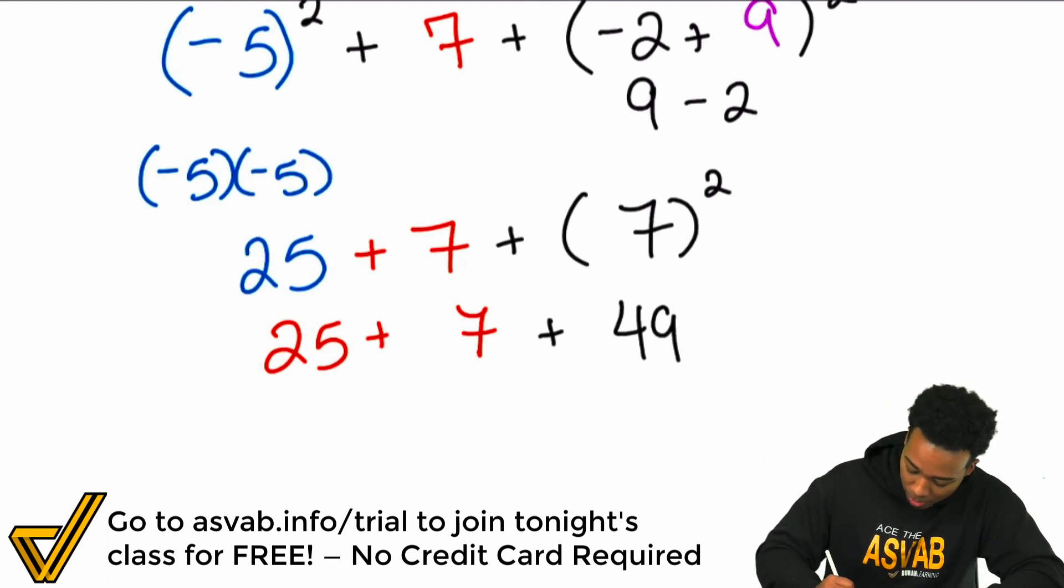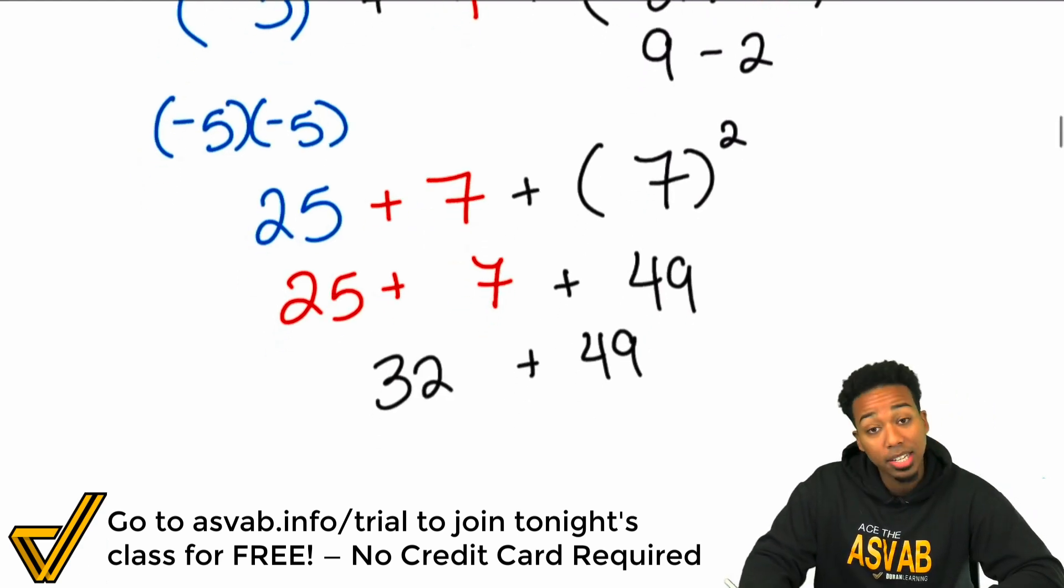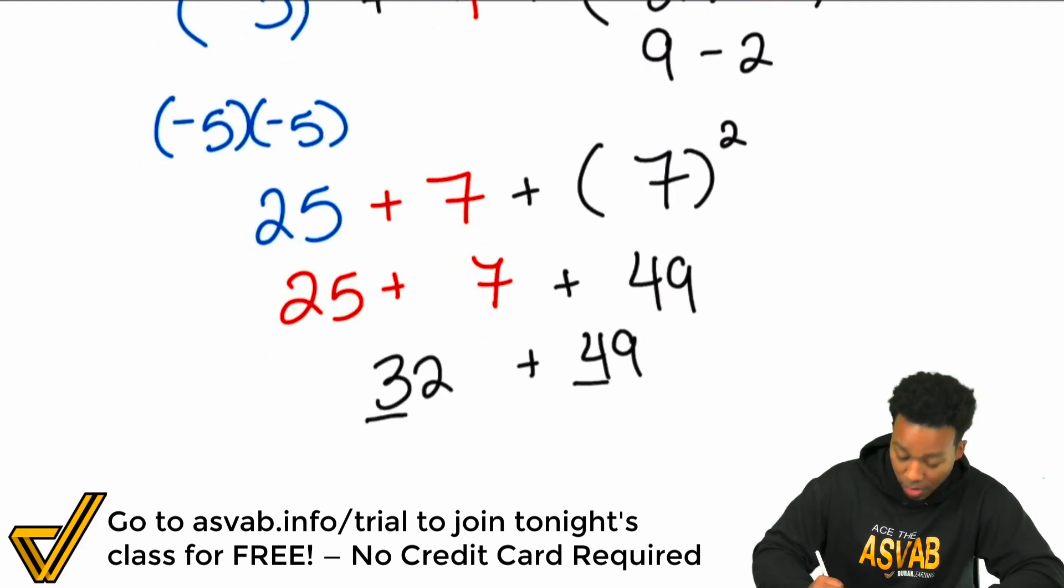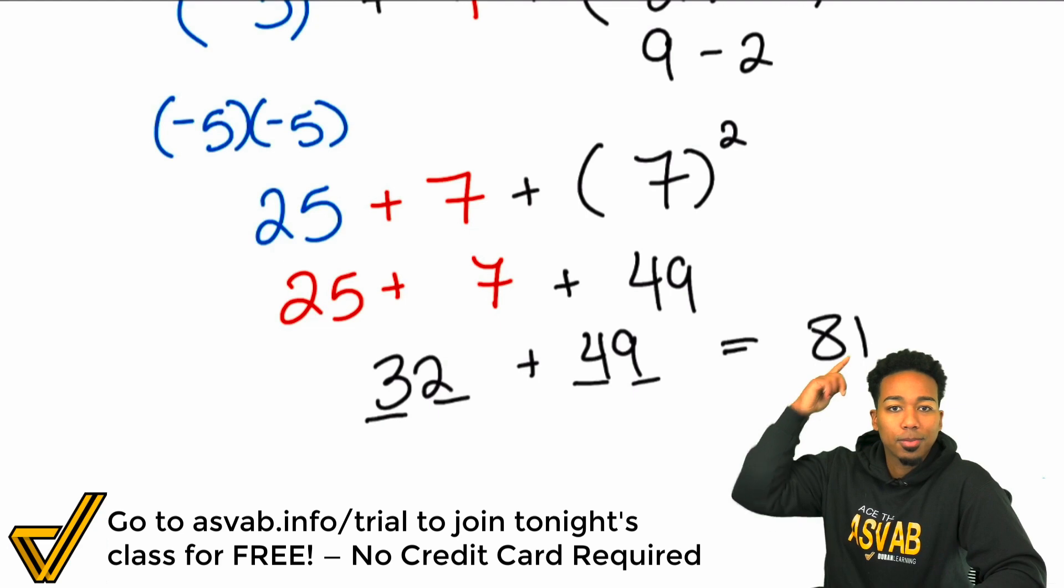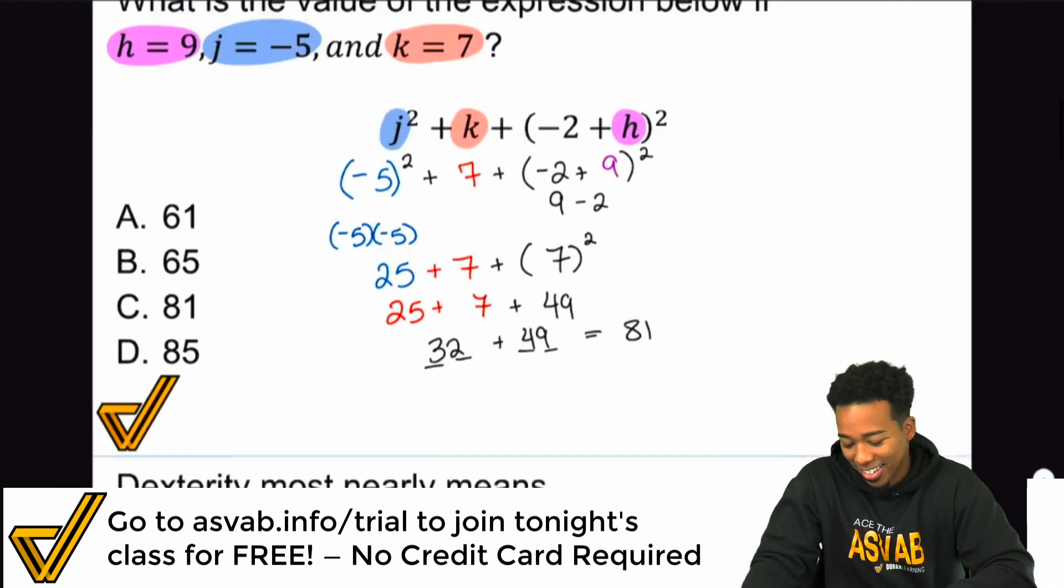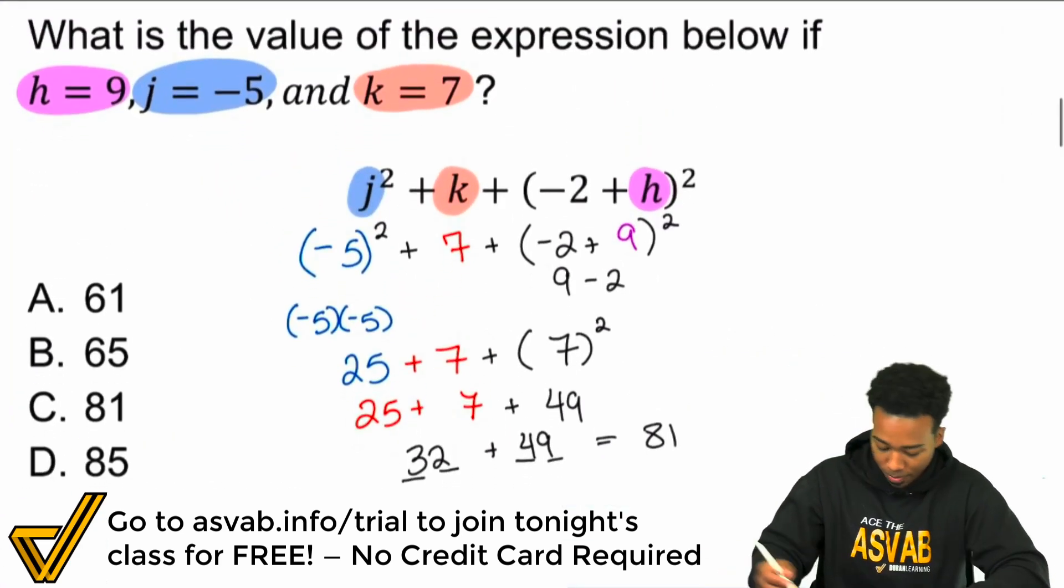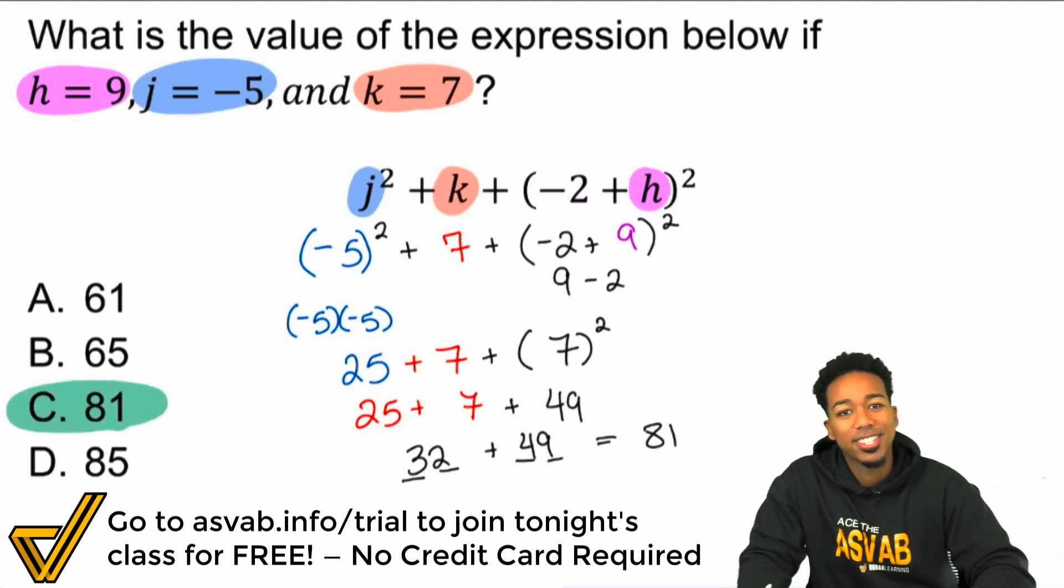25 plus 7, that's going to be 32. 32 plus 49, what's that going to give us? Well, you can do 30 plus 40, which is 70. 79, 81. Boom. That's just a little bit of mental math to give yourself a nice and easy time right there. And so that's why the complete answer here is 81. And we are all set.